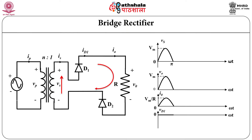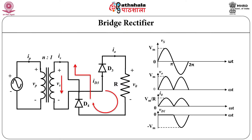During positive half cycle, D1 and D2 will be turned on and the path will be completed through the output resistor, that is load R, as shown in figure. You will get a positive output. During negative half cycle, current will be reversed and current will flow through D3, R, and D4 and return. So you will get the positive voltage. The output voltage of this circuit is similar to the center tap full wave rectifier.